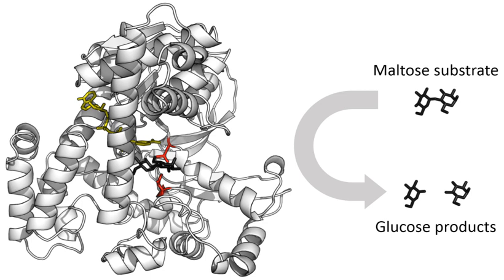A non-competitive inhibitor binds to a site other than where the substrate binds. The substrate still binds with its usual affinity and hence Km remains the same. However, the inhibitor reduces the catalytic efficiency of the enzyme so that Vmax is reduced. In contrast to competitive inhibition, non-competitive inhibition cannot be overcome with high substrate concentration. An uncompetitive inhibitor cannot bind to the free enzyme, only to the enzyme-substrate complex; hence, these types of inhibitors are most effective at high substrate concentration. In the presence of the inhibitor, the enzyme-substrate complex is inactive. This type of inhibition is rare.